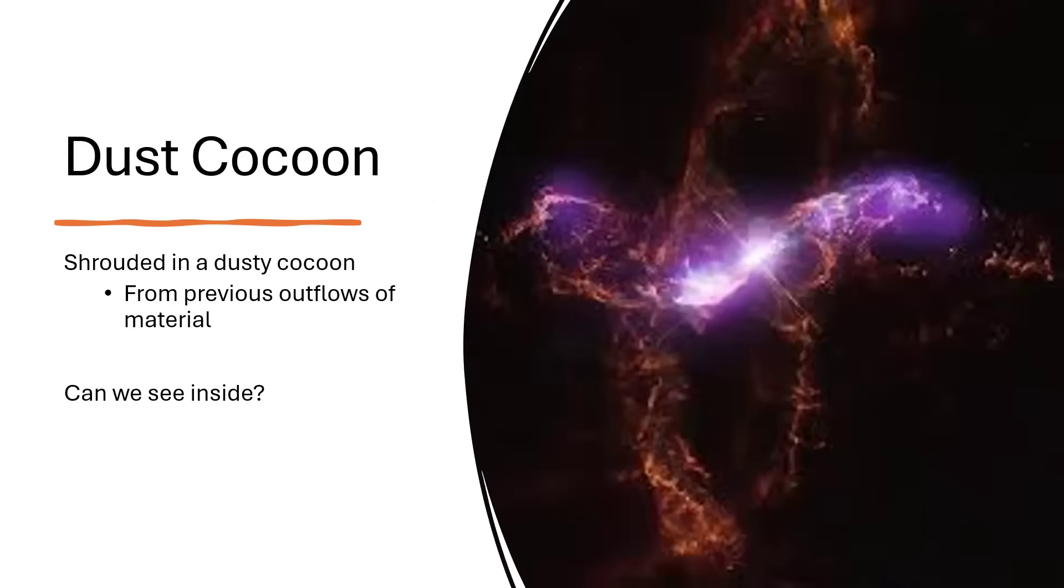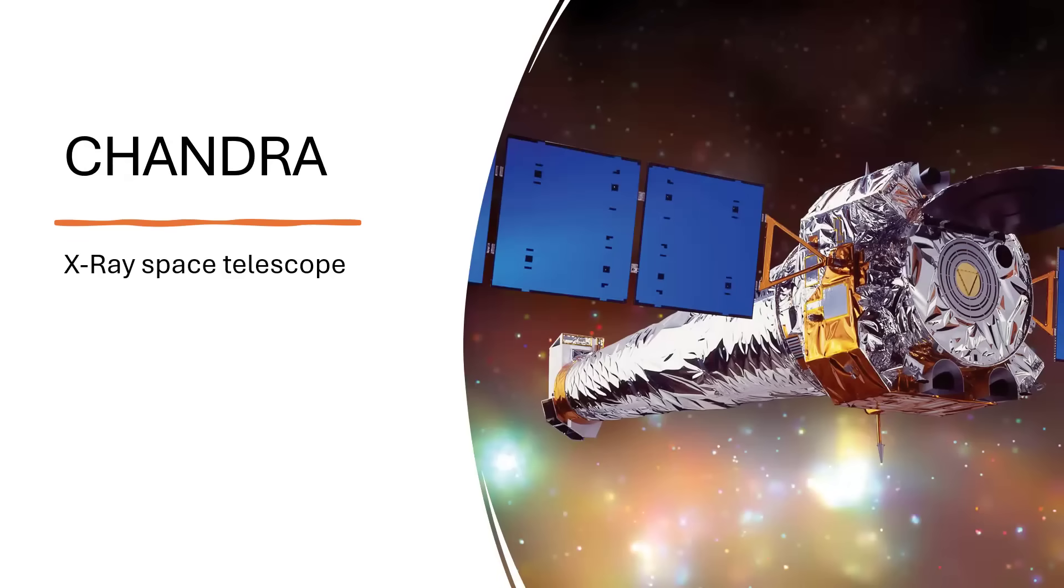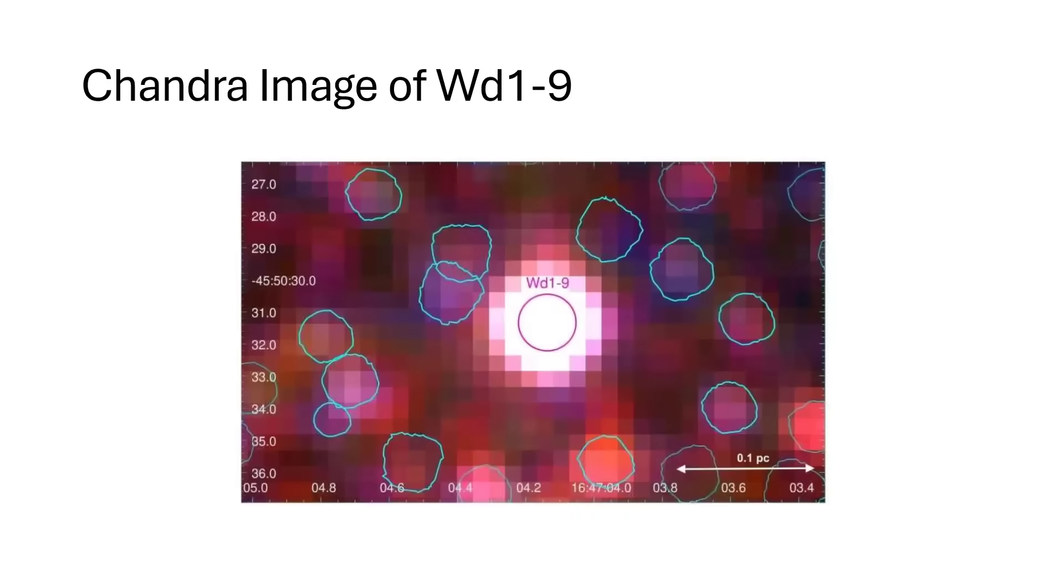Now what we think is going on is that the star itself is trapped inside a huge dust cocoon, which has been ejected, probably from the star itself, in a previous outburst or large outflow of material. And the question really is, can we confirm this? Can we see what's going on inside? And this is where we need the Chandra X-ray telescope to put on our X-ray specs and have a look inside the central region of WD1-9. And here's Chandra's image of the star with this clumpy material around it, suggesting that we are on the right track, and that there is a cocoon of previous ejecta responsible for the shrouding of the main star itself, making it appear dimmer than we thought, and also creating some of the emissions that we've detected.